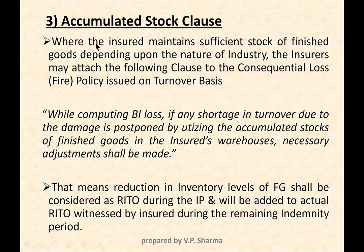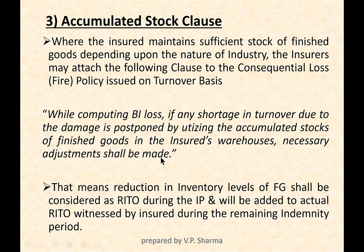The accumulated stock clause applies where the insured maintains sufficient stocks of finished goods. The insurer may attach this clause to a consequential loss policy issued on a turnover basis only. The clause reads: while computing BI loss, if any shortage in turnover due to the damage is postponed by utilizing accumulated stocks of finished goods in the insured's warehouse, then necessary adjustments shall be made.